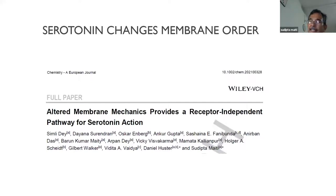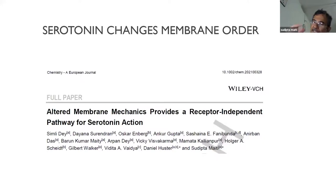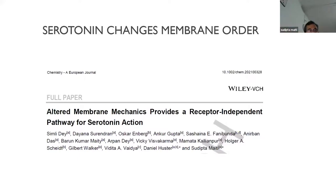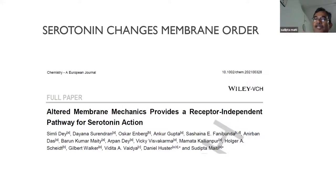Very recently we found — work that came out in Chemistry: A European Journal less than a week ago — that a small molecule called serotonin, which is a neurotransmitter, actually changes membrane mechanical properties. Serotonin has its own receptor and works through it, but even if you block all the receptors it still has some effect on the cell. It turns out it can change membrane order, which can affect all kinds of cell responses. So we used serotonin as an agent for changing order and asked: do all the probes tell the same story?